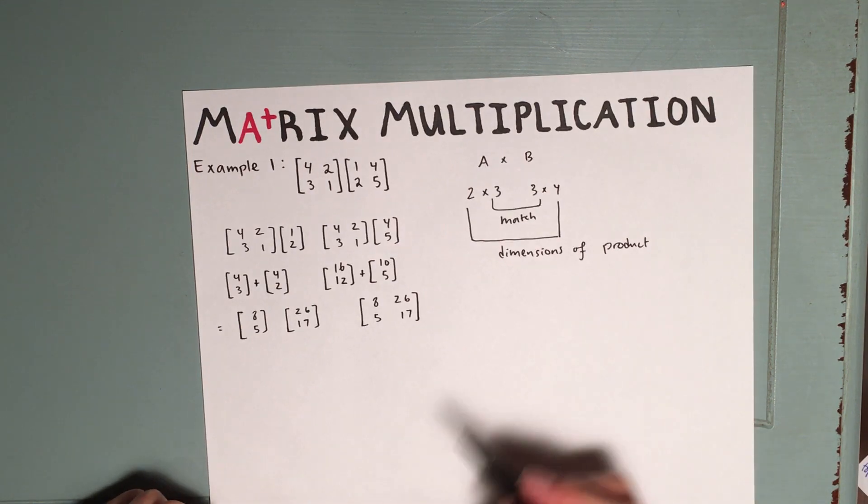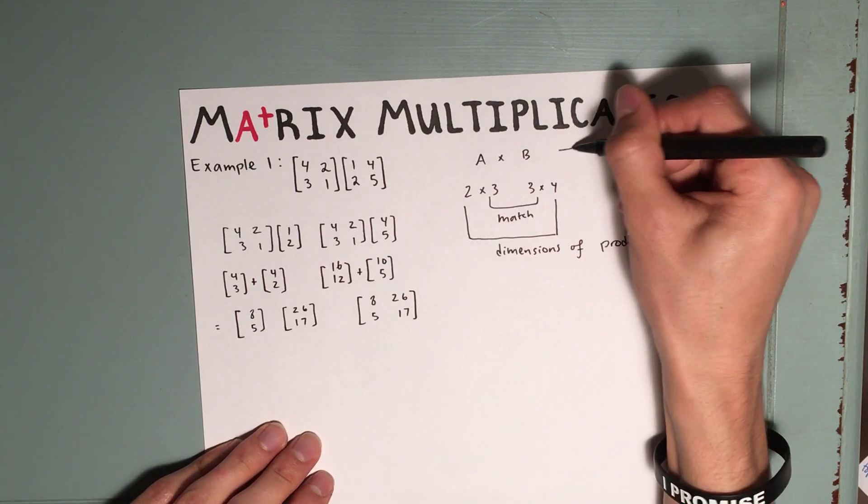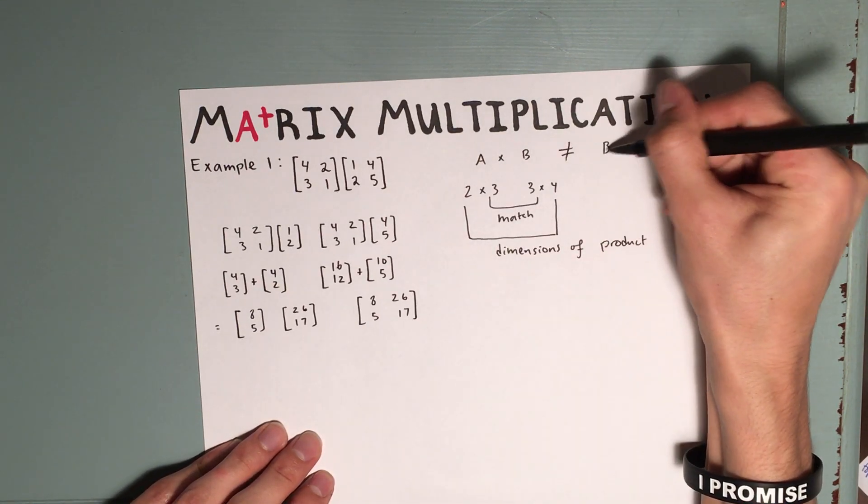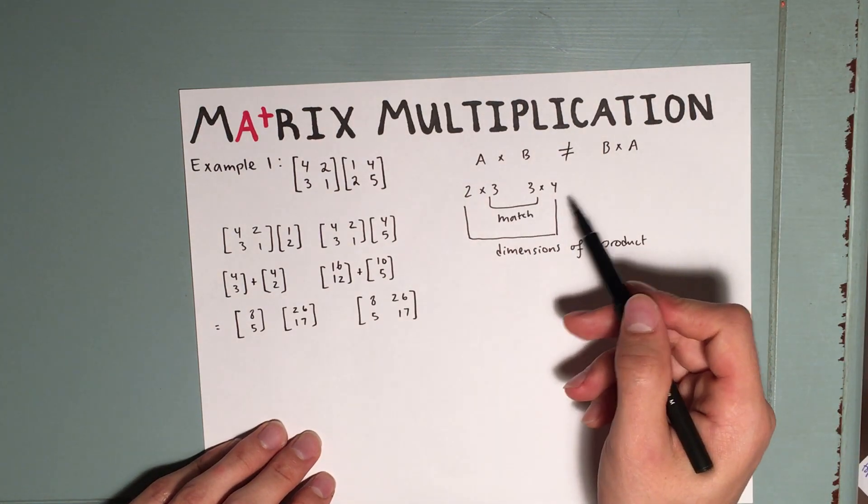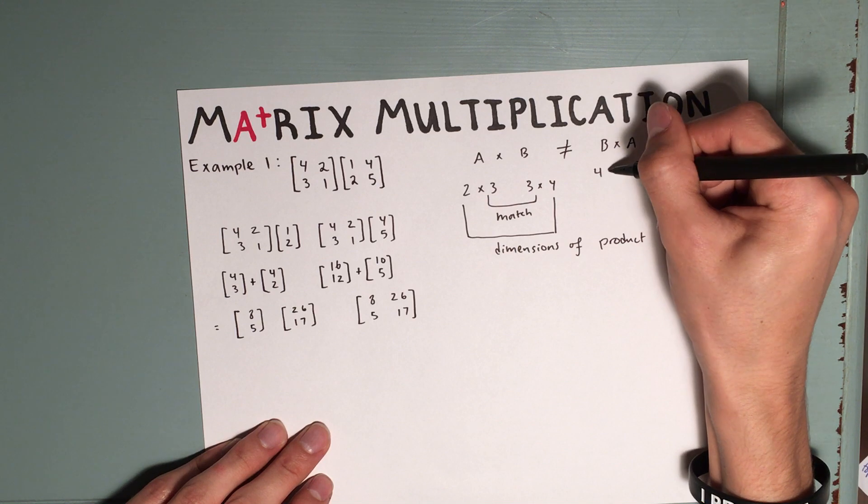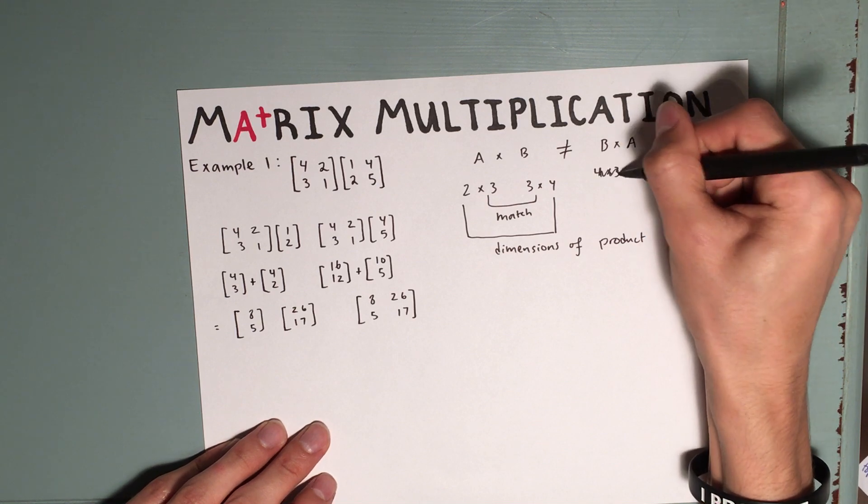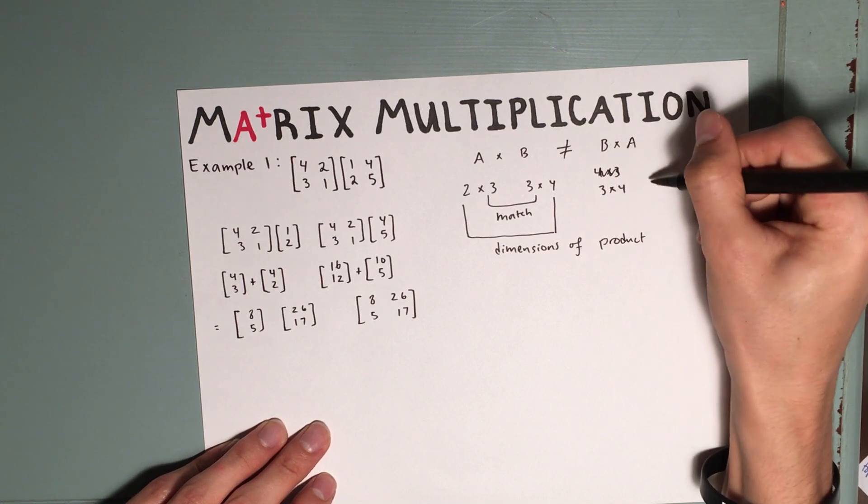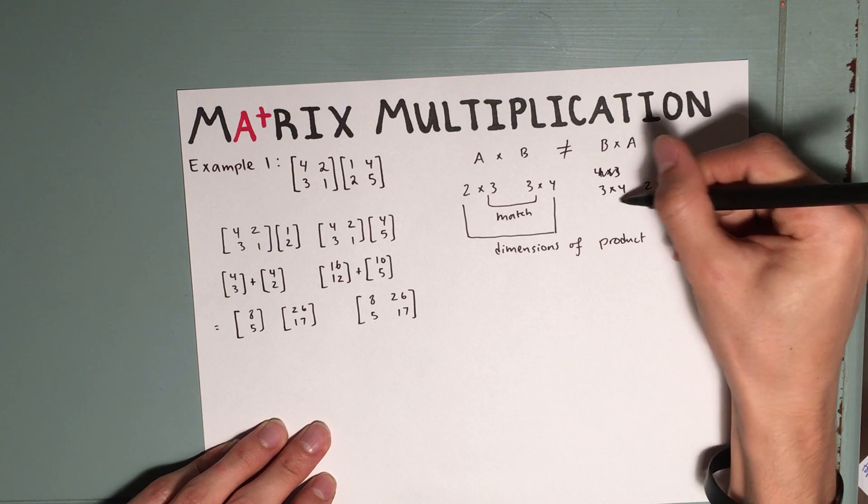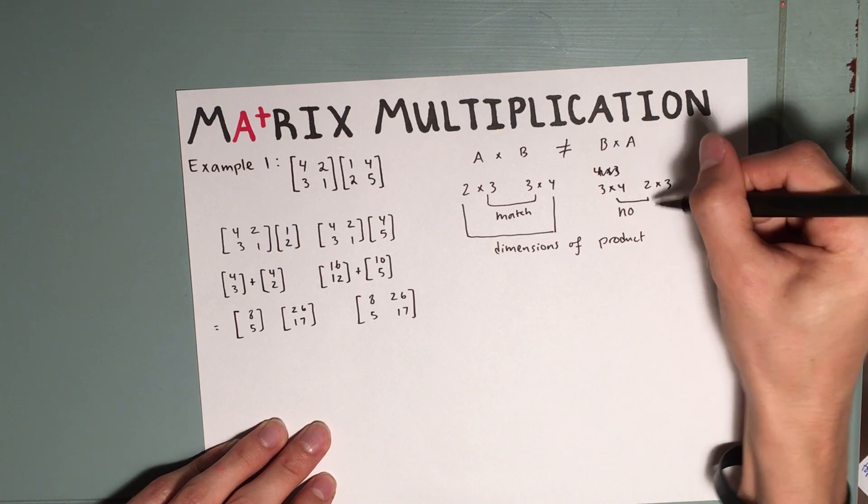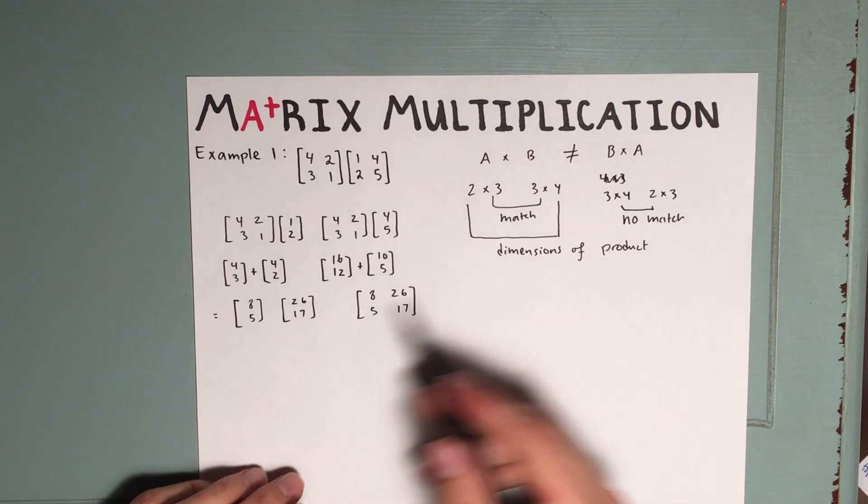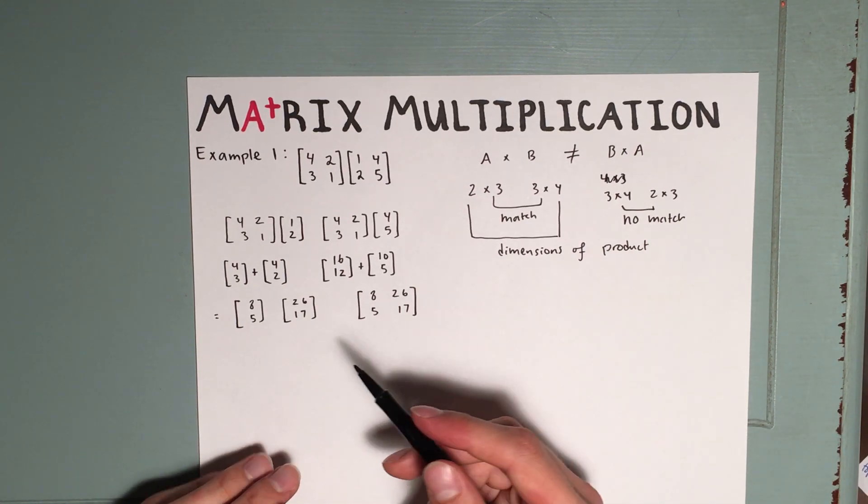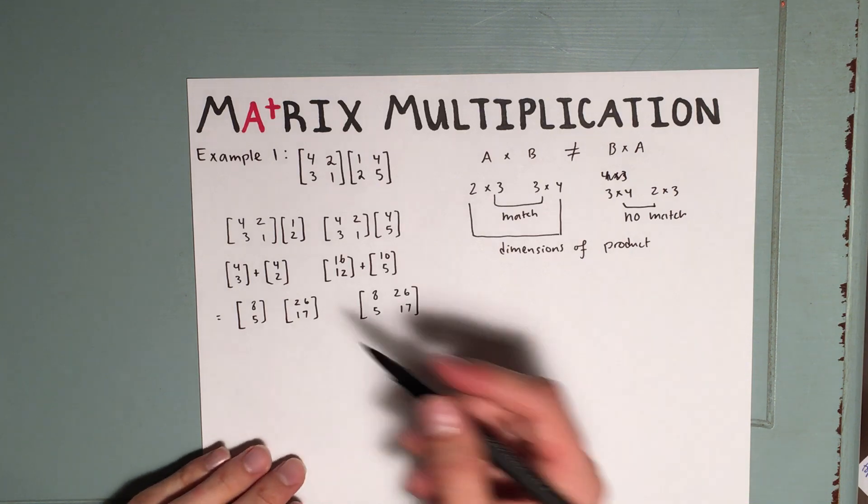Now, a word of caution is that A times B is not always equal to B times A. In this example, we wouldn't even be allowed to multiply B times A since a 3 by 4 matrix and a 2 by 3 matrix do not have an inner match. Even when you are allowed to multiply these matrices, they don't always give the same answer. So let's try that here.